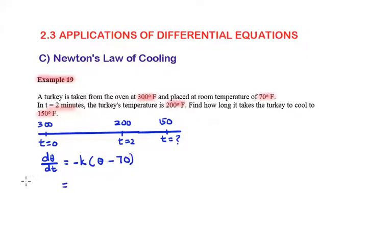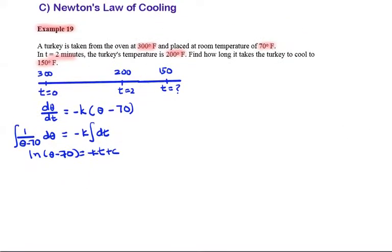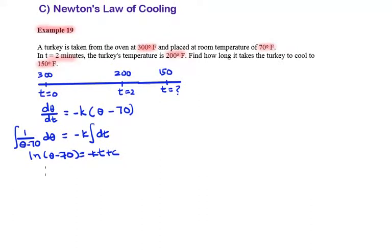Separate the variable: 1 divided by (θ minus 70) dθ equals negative k dt. Integrate both sides. We have ln(θ minus 70) equals negative kt plus c.